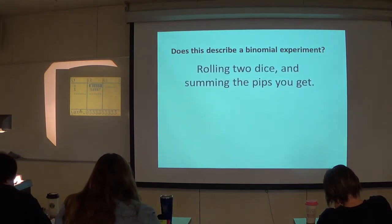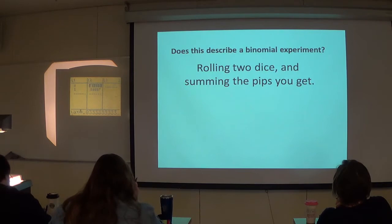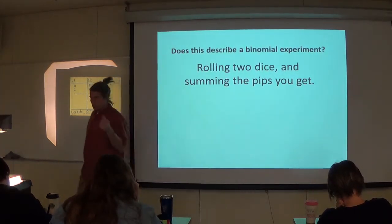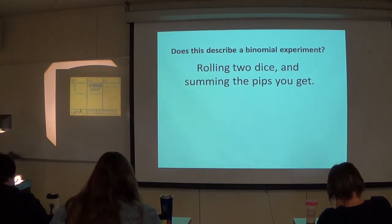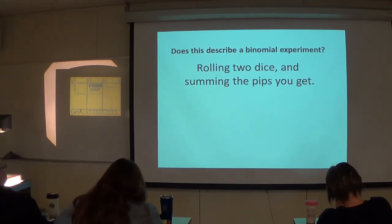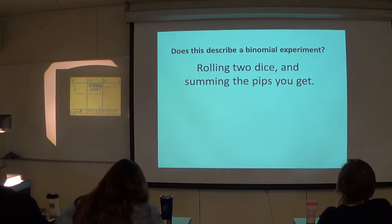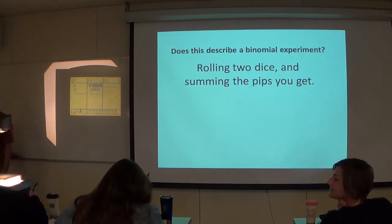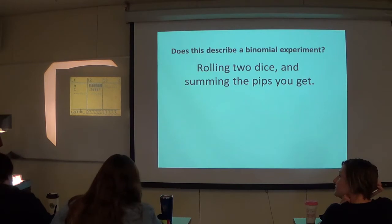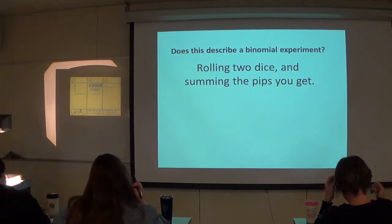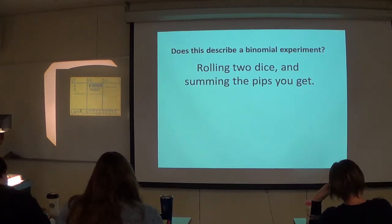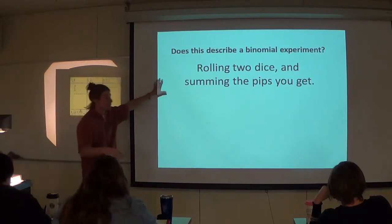Does this right here describe a binomial experiment? I'm hearing lots of no's. Why is it not binomial? Because it's the same as the other one — it has too many outcomes. You've got 2, 3, 4, 5, 6, 7, 8 up to 12. It's not binomial — it's 11-nomial. So this is not binomial. We won't bother putting it in our TIs because there's no need to.